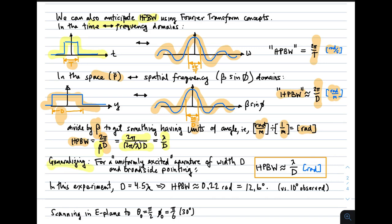So generalizing, for a uniformly excited aperture with d broadside pointing, we expect the half-power beam width to be about lambda by d radians. Or you could say 1 over the width of the aperture in wavelengths. Now, in the experiment above, we had 10 elements with half-wavelength spacing. So d is 4.5 wavelengths. So following the formula, we expect the half-power beam width to be 0.22 radians, which is 12.6 degrees. And what we observed was about 10 degrees. We're not expecting the results to be equal, because in one case we have a sampled aperture, in this case we have a continuous aperture. But we expect them to be pretty close, and in fact they are.